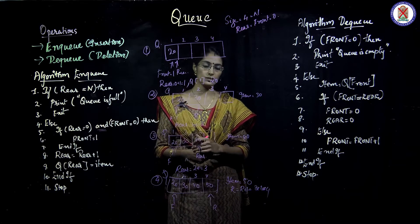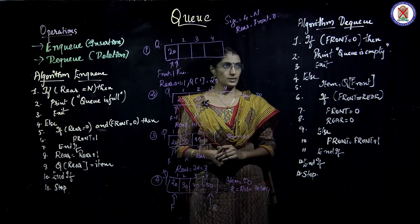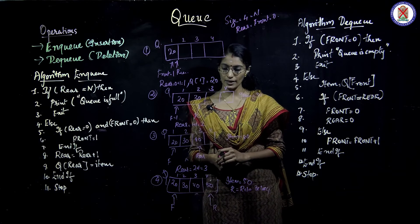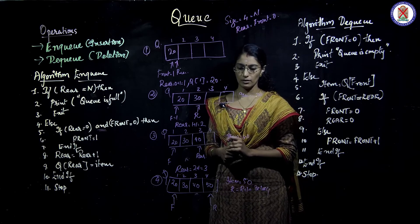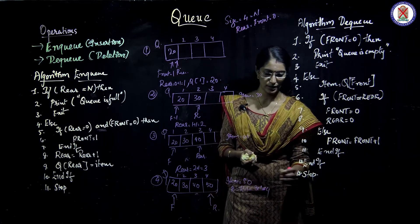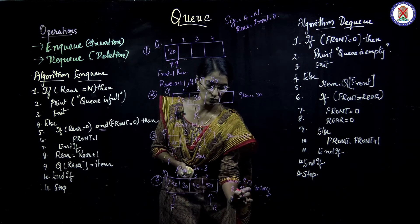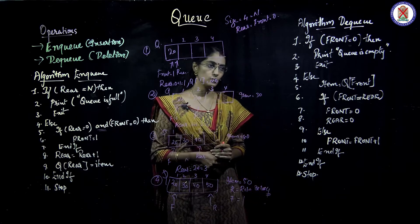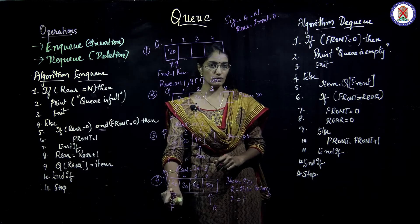Now let us do the reverse — the deletion operation (DQ). After four insertions, the values are: rear equals 4, front equals 1. The condition 'if front equals 0' is not applicable, so we go to the else portion. In else, Q of front is currently pointing to the value 20, so item is assigned the value 20.